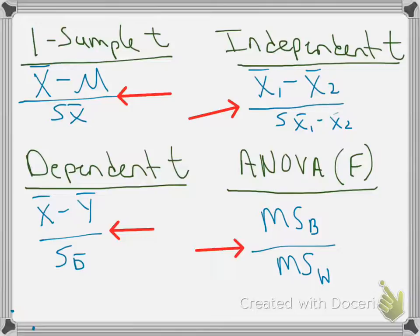And then on the bottom, what you've got is, on average, how much variability would I expect to get between the numbers just due to random sampling. In ANOVA, we find the expected difference by looking at how much variability there is within each sample. The difference between the individual scores and the sample mean is just considered to be random sampling variation — just random noise.